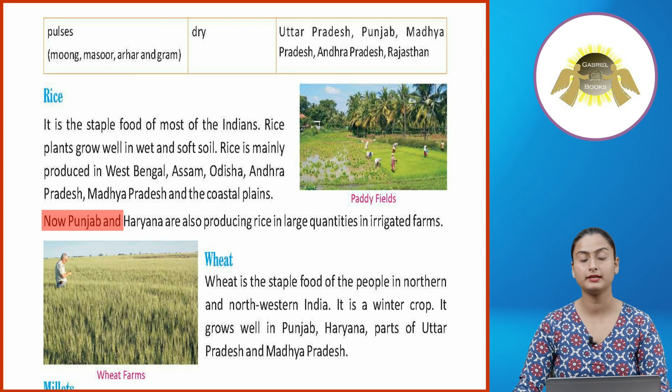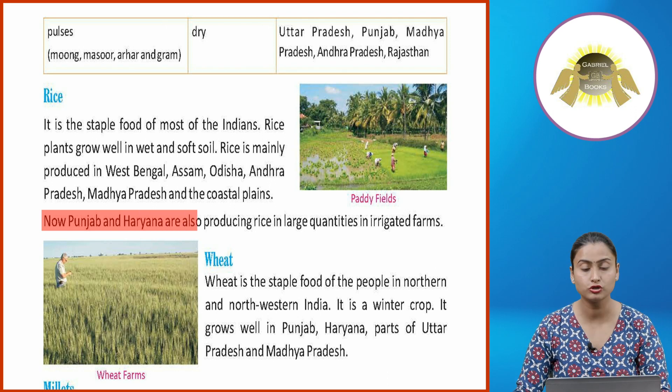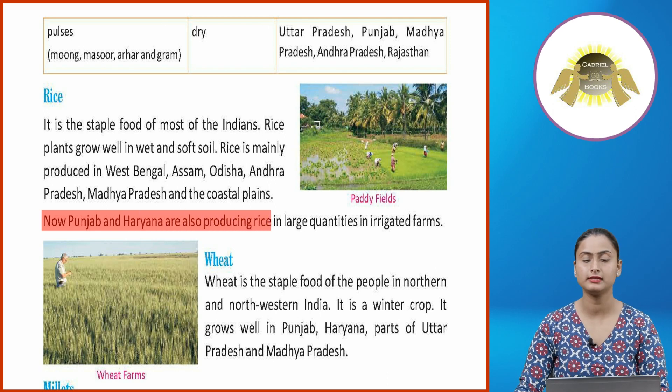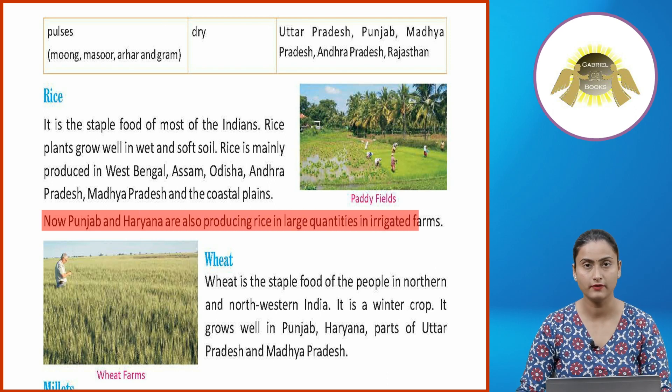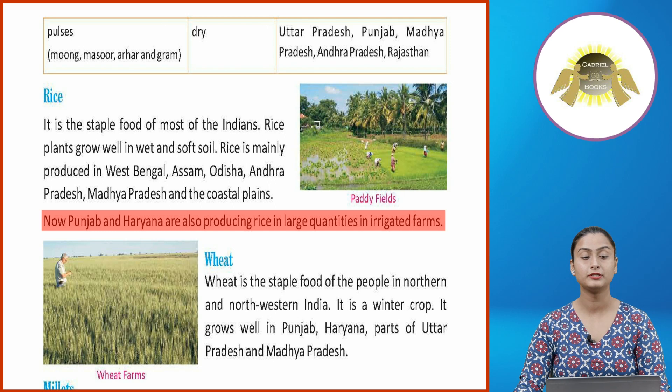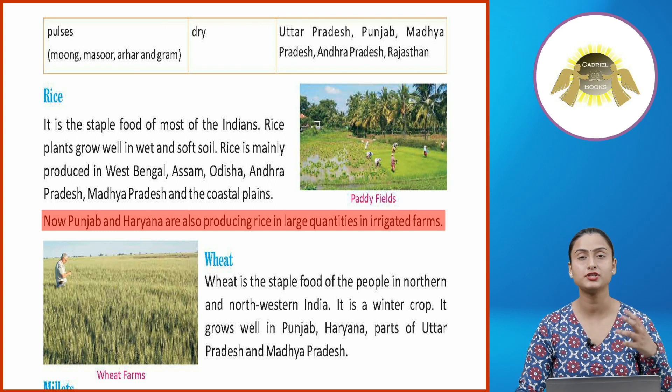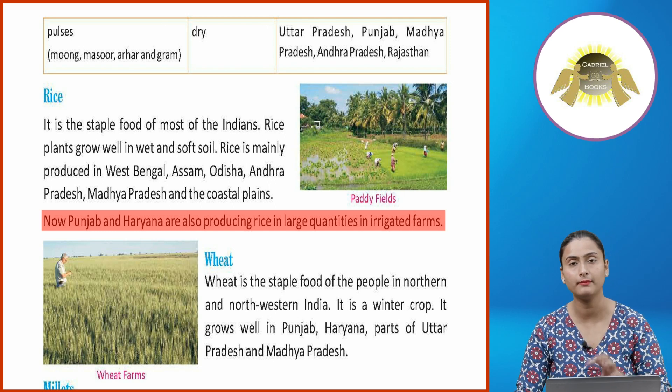Punjab and Haryana are also producing rice in large quantities in irrigated farms.